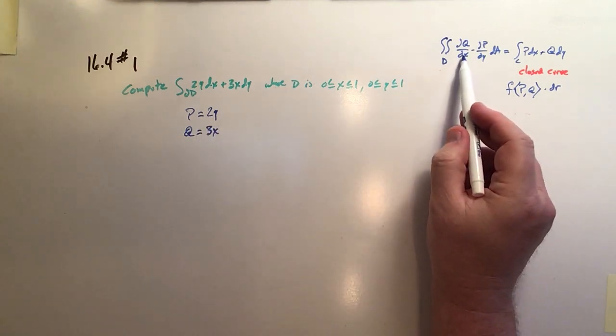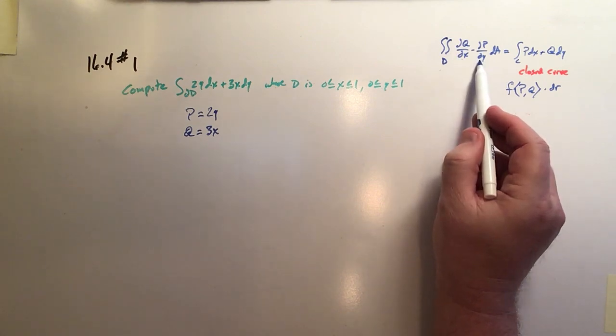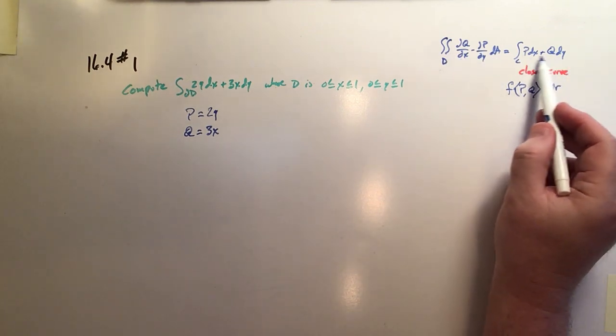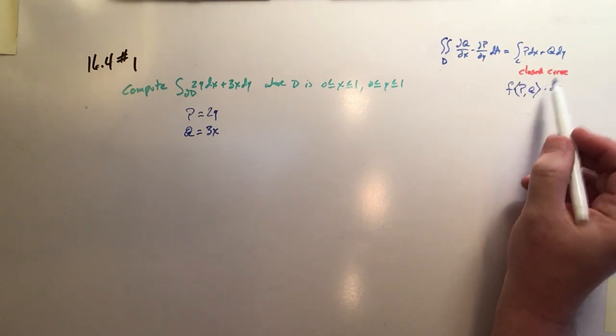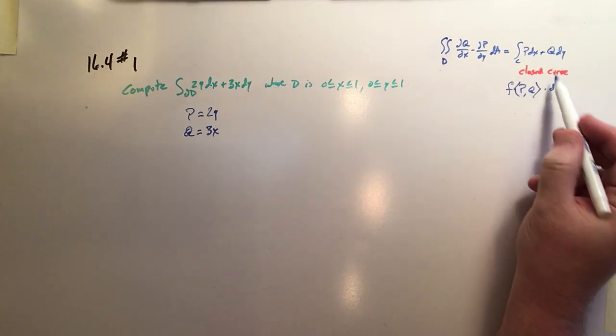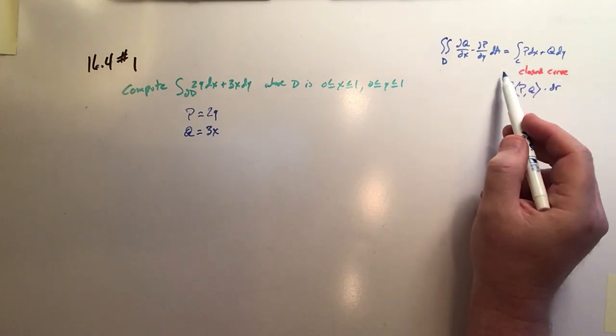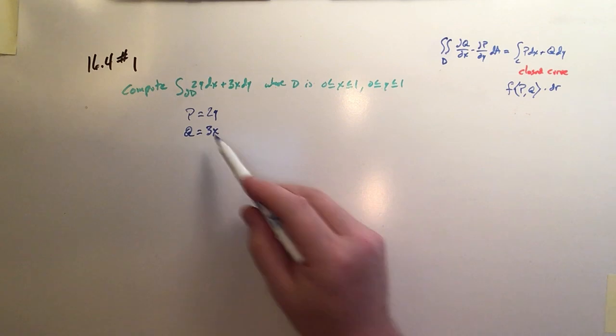And what Green's Theorem tells us is the difference between these partials taken over the area is the same thing as the sum of the functions, basically as a dot product. In essence, this is just a line integral. And one way to do that is to step it up, to use these partial derivatives, and do it as an area integral.